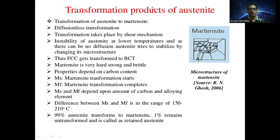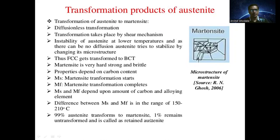MS represents the temperature at which martensitic transformation starts, and MF represents where martensitic transformation is complete. MS and MF depend upon the amount of carbon and alloying elements. The difference between MS and MF is in the range of 150 to 210 degrees Celsius. 99% of austenite is transformed to martensite, while 1% remains untransformed and is called retained austenite. The needle-shaped microstructure of martensite, which is hard in nature, forms between 150 and 210 degrees Celsius.